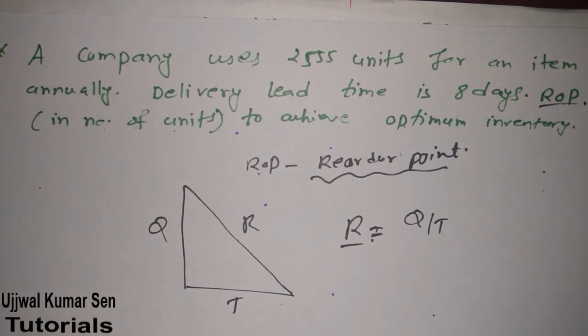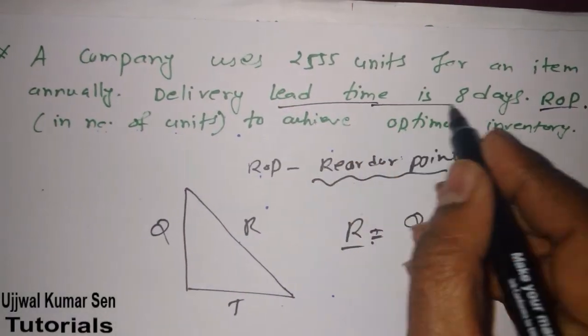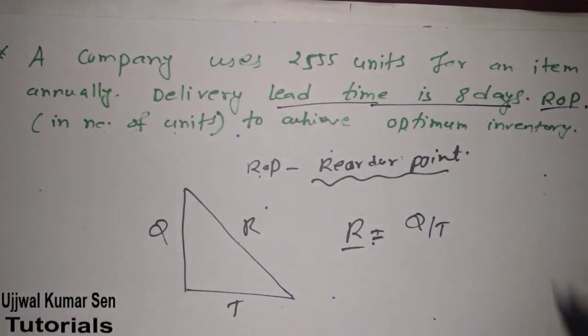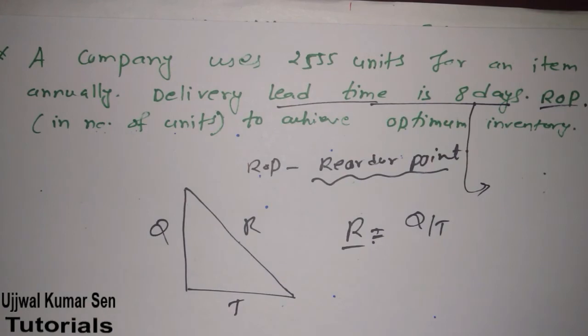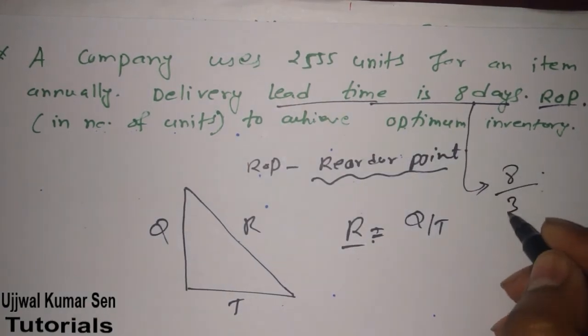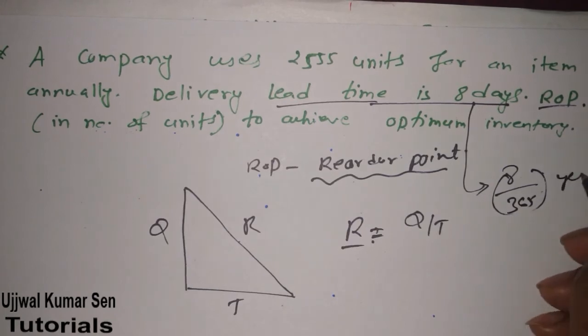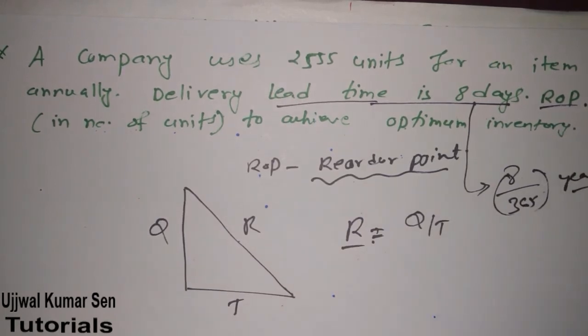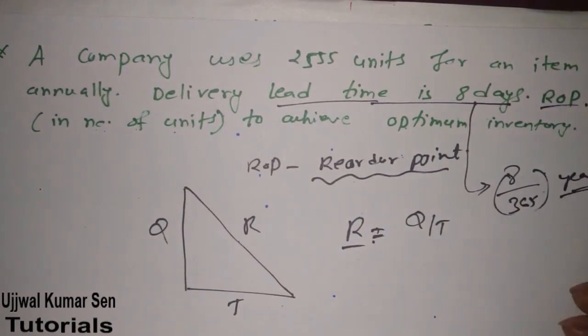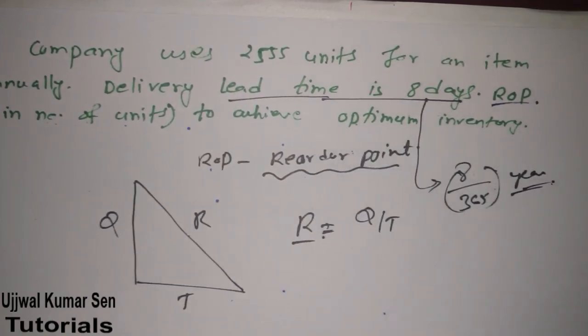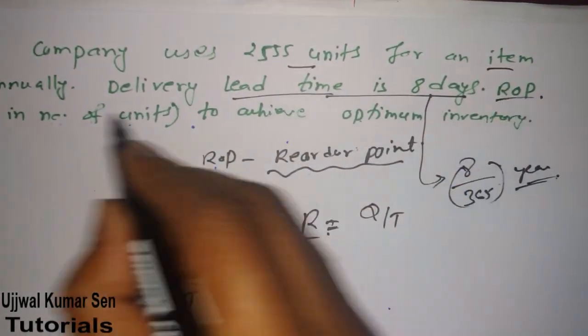The most important factor is lead time. They've given 8 days, so we have to convert this to per year by dividing by 365. Lead time is 8 days, so it becomes 8/365 years, because the items are given annually.